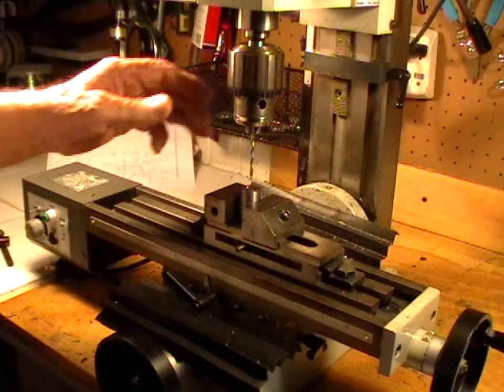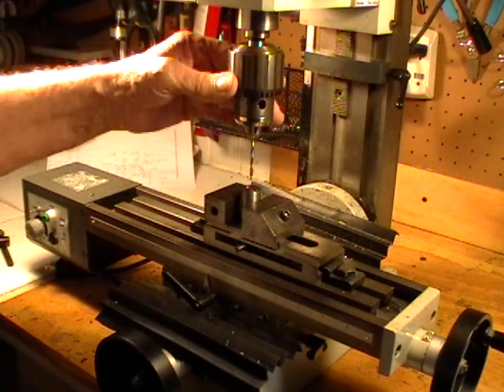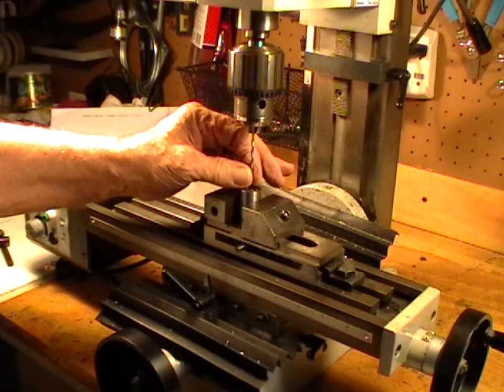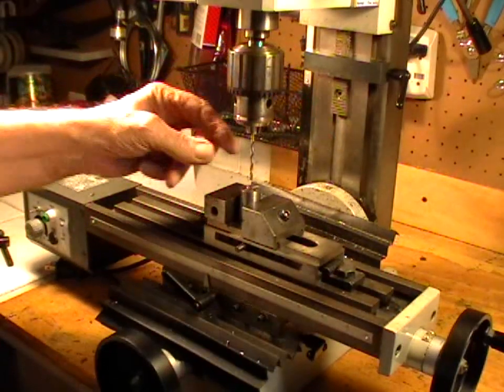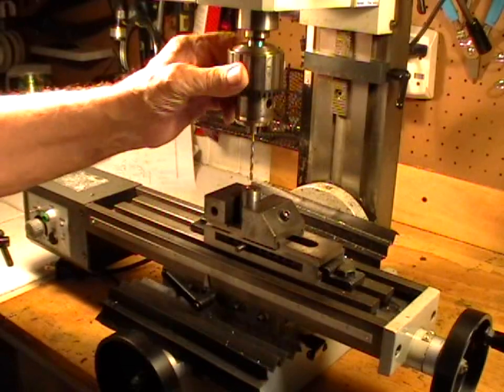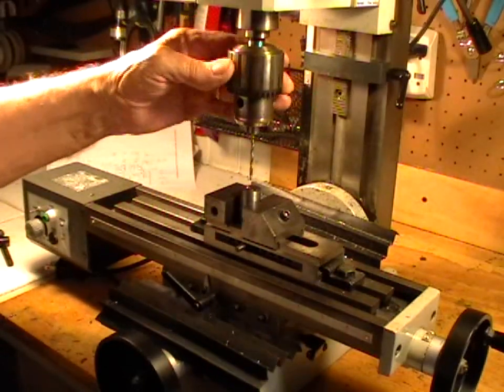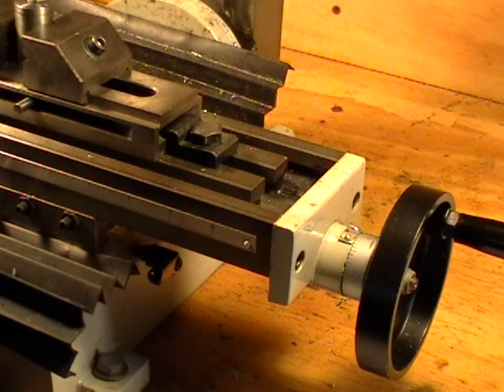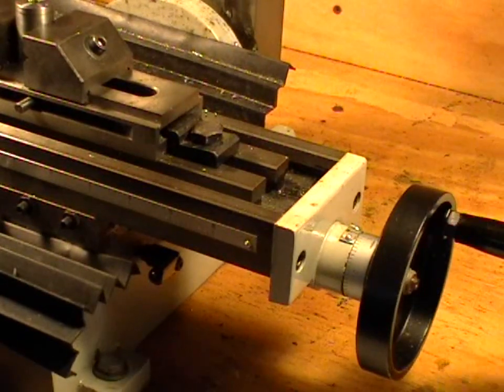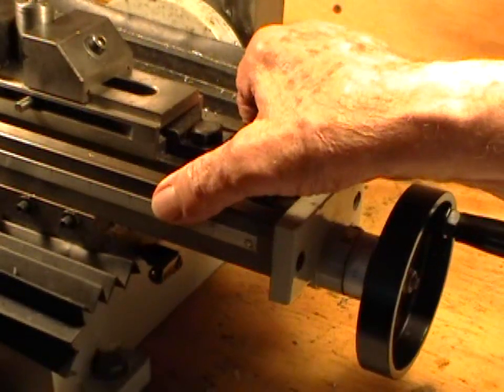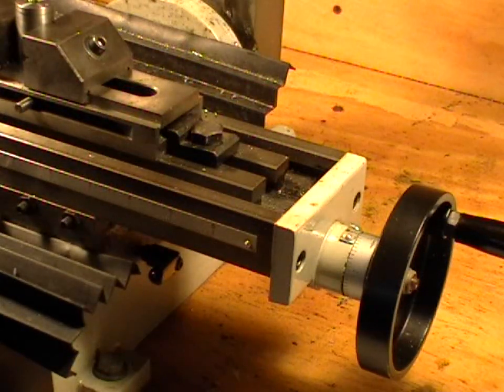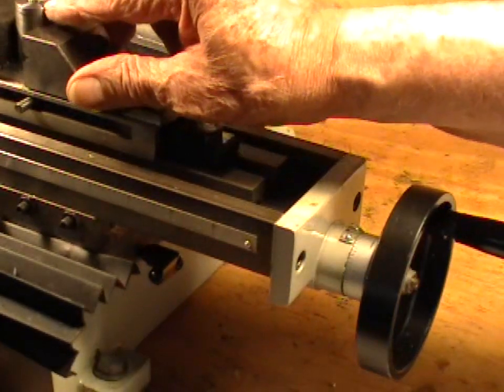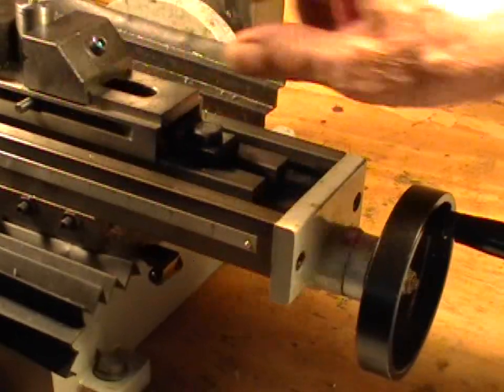That's it. I've changed the drill now to a number 31 which is five thou undersized to an eighth. So now we have to move the whole table this way to get it over the tiny little pod for the one eighth hole.